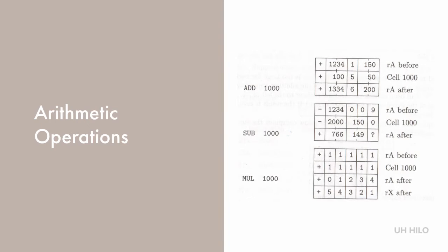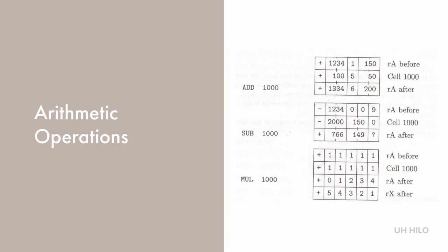We use the value V to specify the contents of the memory address. For add, V gets added to the contents of register A. For subtract, V is subtracted from the contents of register A. For multiply, the product of V and register A replaces the values in registers A and X. For div, A and X together are divided by V.